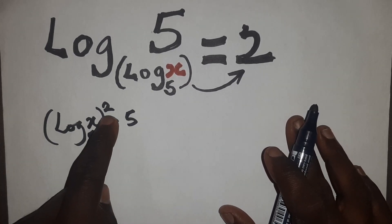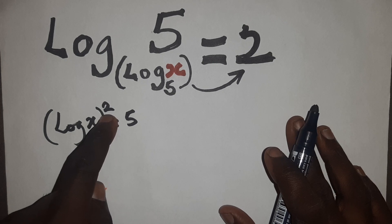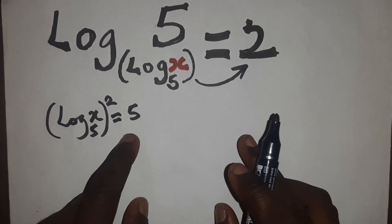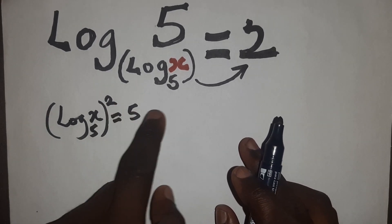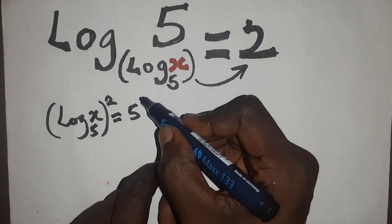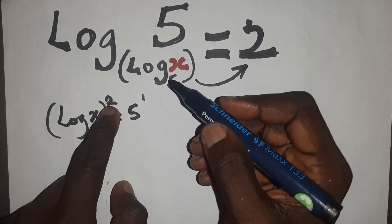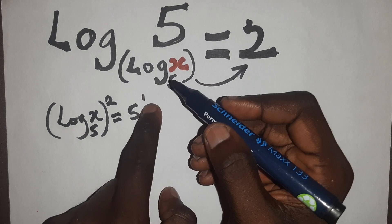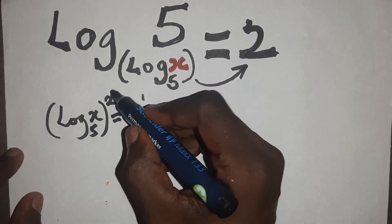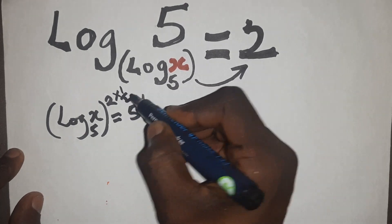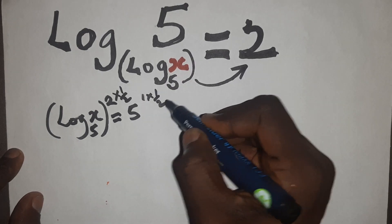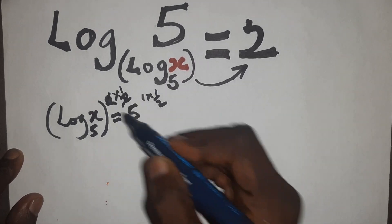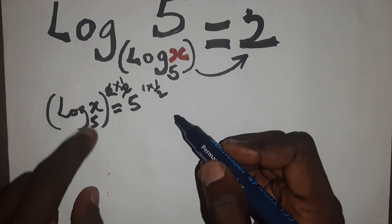So to eliminate 2, we are going to multiply both sides by, both powers by 1 over 2. Of course, this 5 has a power of 1. Multiply this power by 1 over 2 and also multiply this power by 1 over 2. So these two cancel out. I will end up having log x base 5.